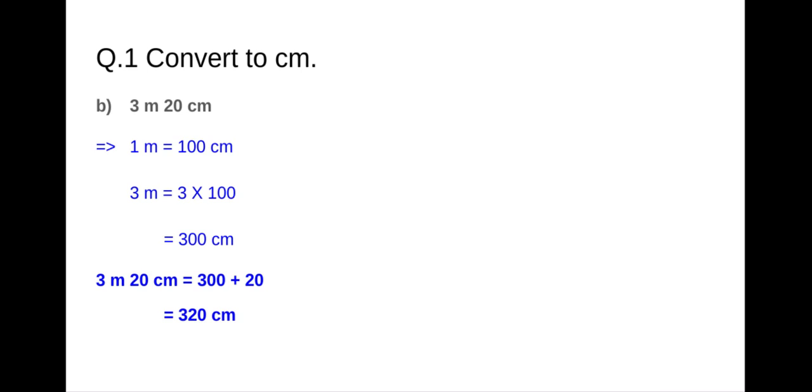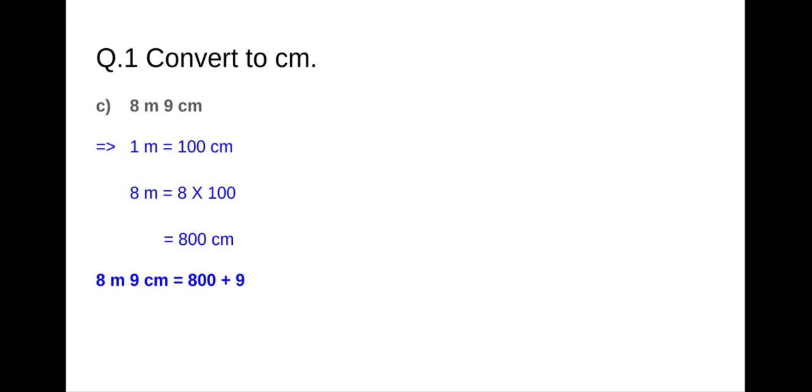Let's solve one more example: 8 meters and 9 centimeters. We need to convert 8 meters to centimeters and then add 9 centimeters. As we know, 1 meter equals 100 centimeters, so we multiply 8 by 100. Therefore 8 meters equals 800 centimeters. So 8 meters and 9 centimeters equals 800 plus 9, and the answer is 809 centimeters.